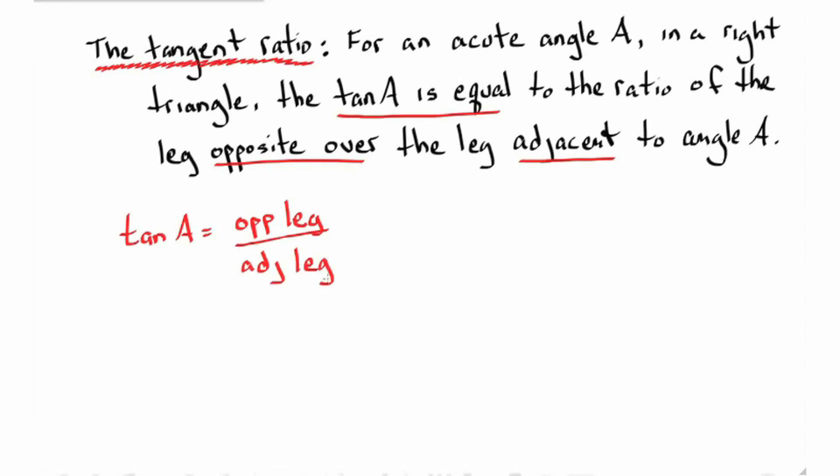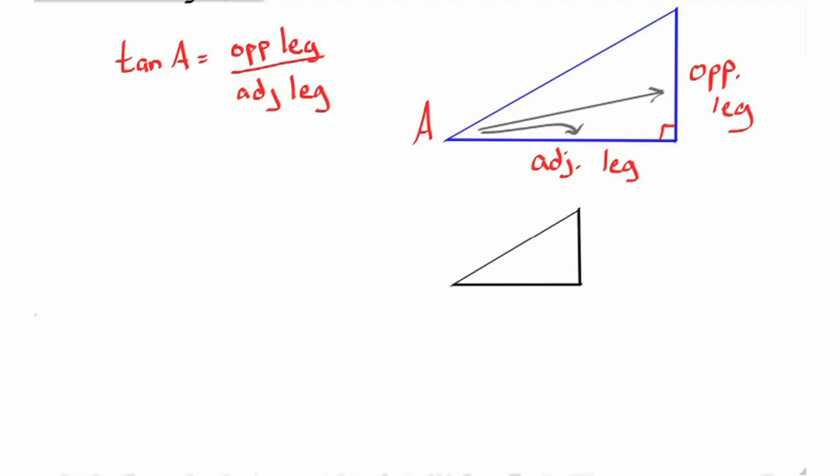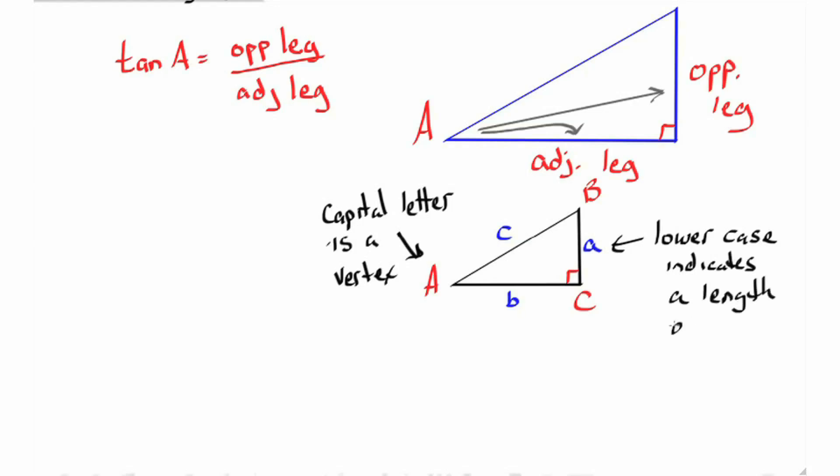Let's look at this a different way. If we have triangle ABC with ABC being the vertices and little a, little b, little c indicating the length of the sides, we can write tangent A equals little a over little b, tangent B equals little b over little a. We cannot take the tangent of C since that is the right angle and we can only use the acute angles of the right triangle.